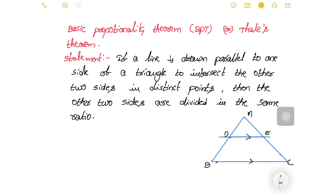Let's consider triangle ABC. A line DE is drawn such that DE is parallel to BC, where D lies on AB and E lies on AC. This line DE intersects the two sides AB and AC, dividing them in the same ratio.